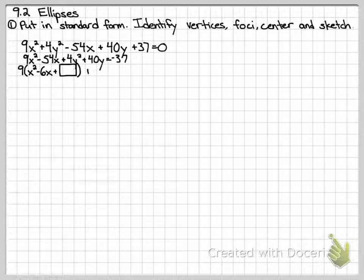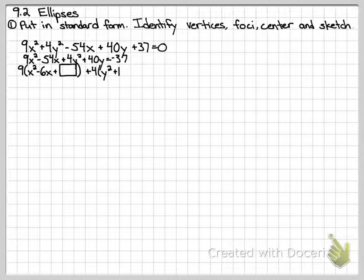And I'm going to do the same thing with the y's. I need to factor out the 4. When I factor out the 4, I get y squared. When I factor out the 4, I get plus 10y. That's going to become a trinomial too, but it'll be with a new number, a different number, so I like to use a different shape. You can do another blank space or a line.